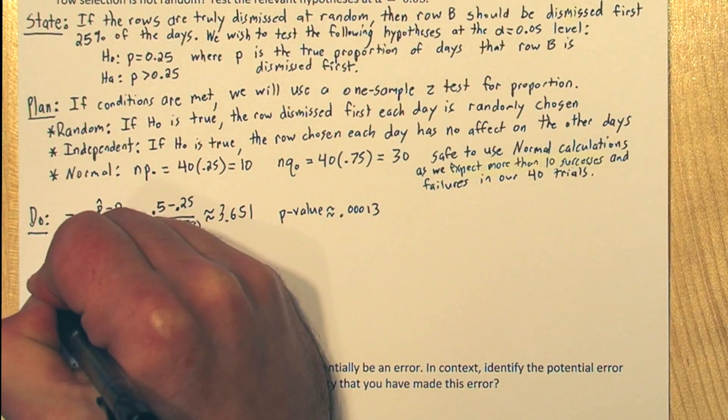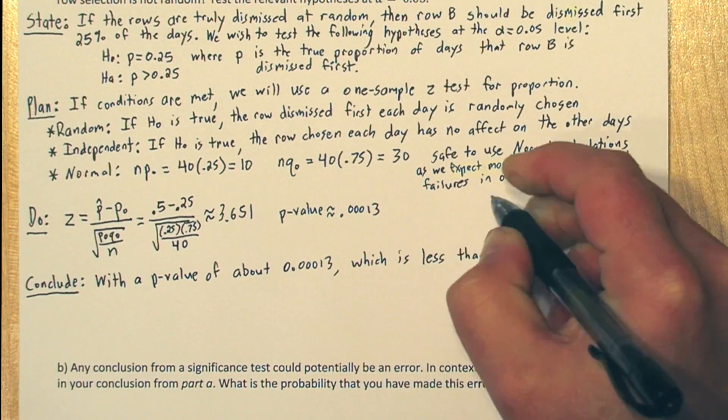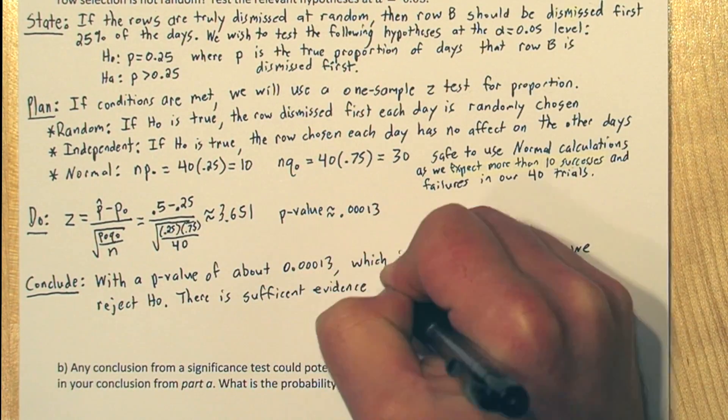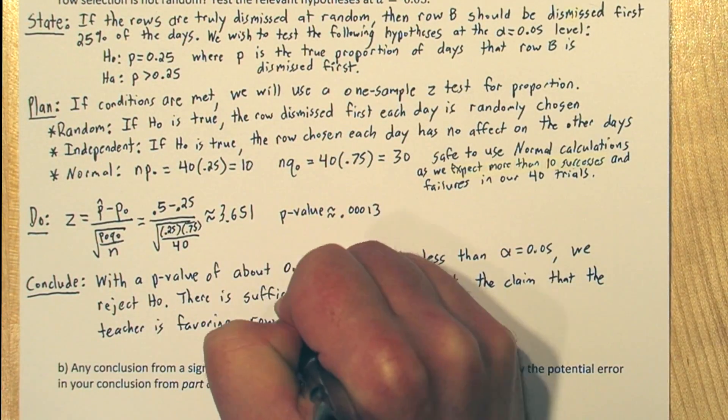Now we're ready to conclude. With a p-value of about 0.00013, which is less than alpha equals 0.05, we reject the null hypothesis. There's sufficient evidence to support the claim the teacher is favoring row B.